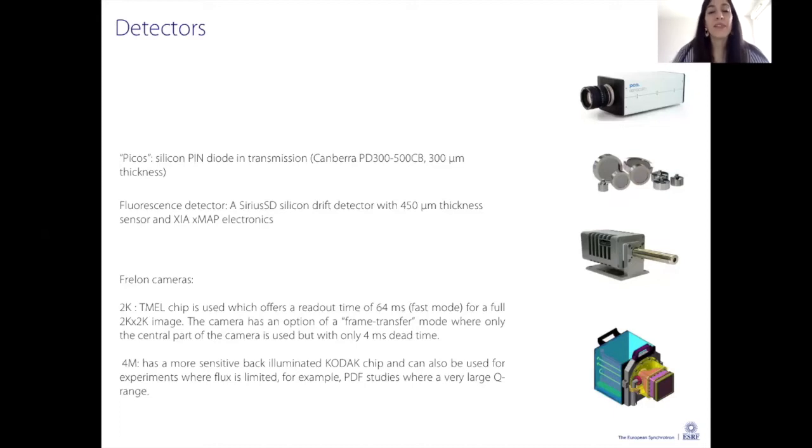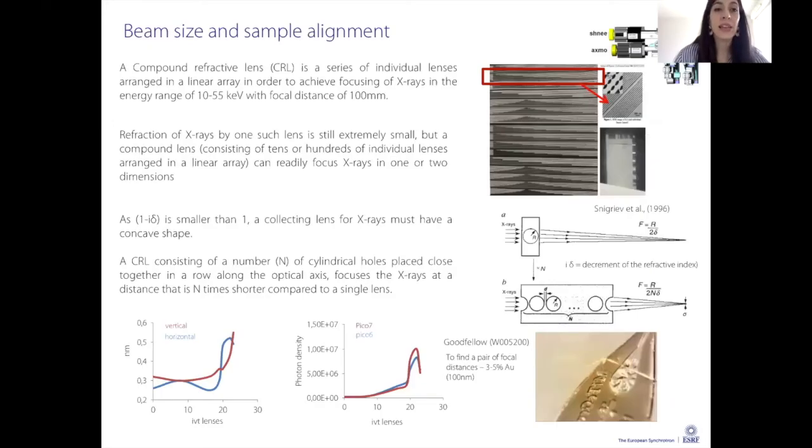You can have several detectors. In the picture before you could see a Dectris detector was mounted. We can also provide a fluorescence detector that we can use either to collect data at the same time we're collecting diffraction data, or just for alignment purposes. For the FReLoN cameras, you will see that in the next months the FReLoN camera will change - we won't have a film camera anymore but will have an Eiger detector.